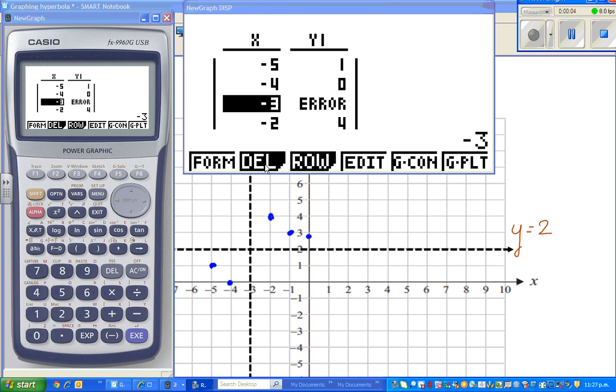Continuing from my last video, we were plotting the points. I told you at x = -3, the function has an error.